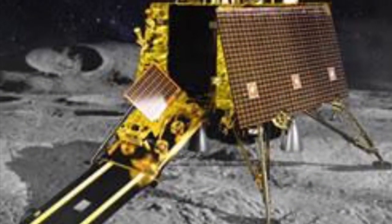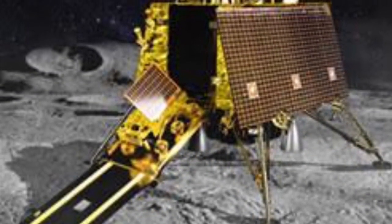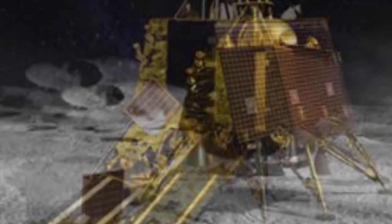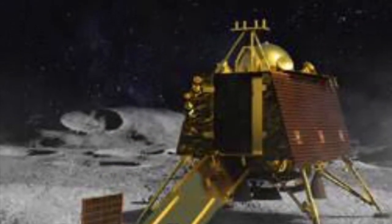ISRO chairman K. Sivan has said the Chandrayaan orbiter has sent a thermal image of Vikram lander identifying the exact location on the moon's surface.